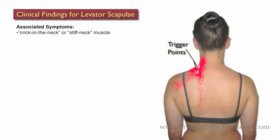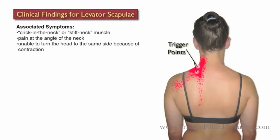Here are some associated symptoms for the levator scapula muscle. Dr. Travell refers to this muscle as the 'crick in the neck' or the 'stiff neck muscle.' Clients will typically complain of pain at the angle of the neck, just at the base of the neck and the shoulder area. They are unable to turn their head to the same side because of the contraction — if they're turning their head to the right and it hurts, they definitely have a problem in the right levator scapula. They may also complain of shortness of breath.